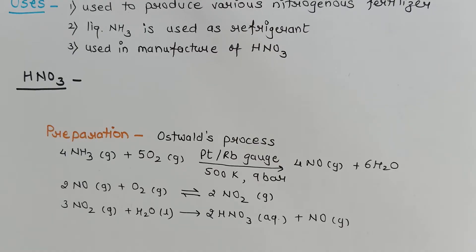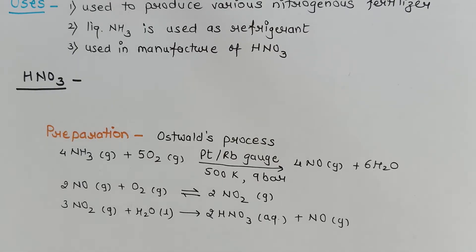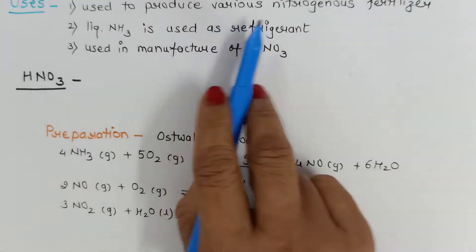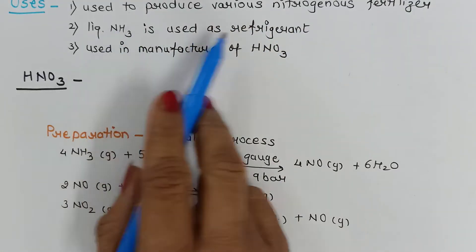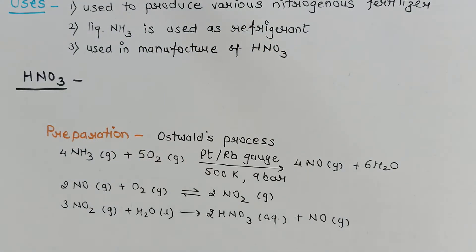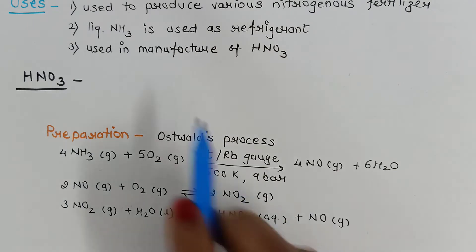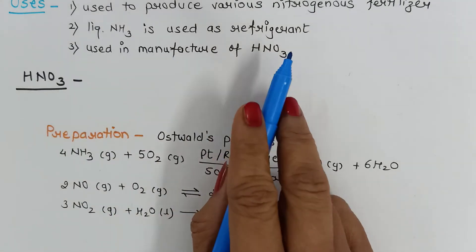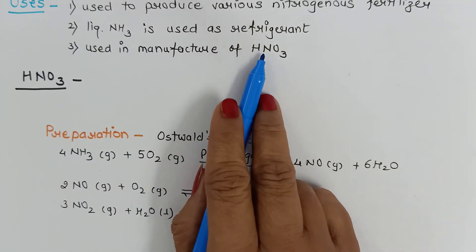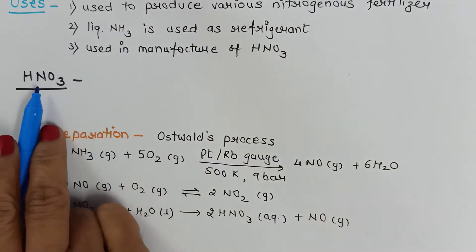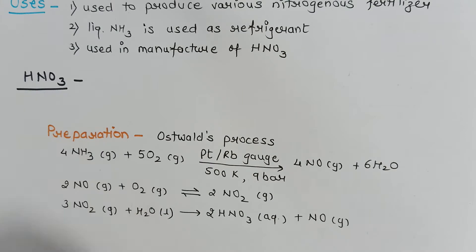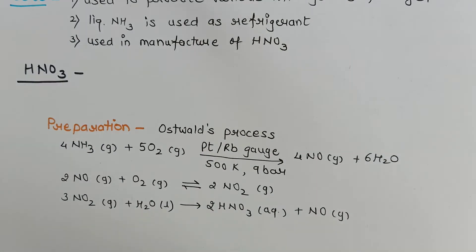The uses of ammonia include: production of various nitrogenous fertilizers, use as a refrigerant in liquid form, and use in the manufacture of nitric acid. Our next compound to study is therefore nitric acid.